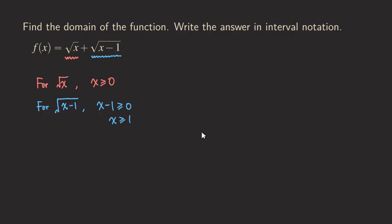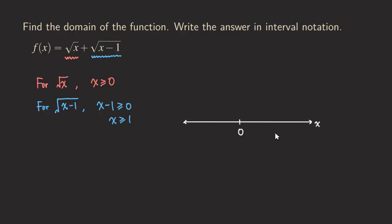Now we are going to graph both domains on the same number line. We draw the number line, which is the x-axis. There is a zero and also a one, so those are our two endpoints — we plot both zero and one on the number line. Graphing each domain separately above the number line will make it easier to find the actual domain for function f.